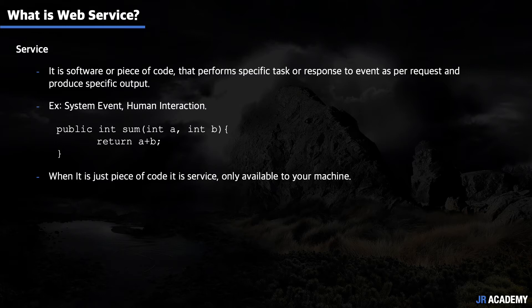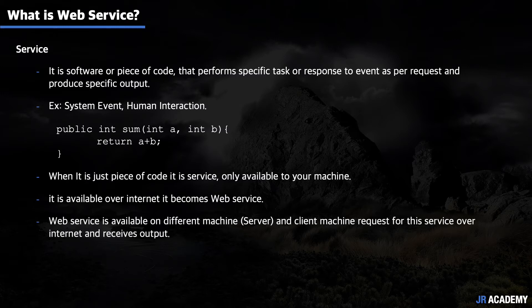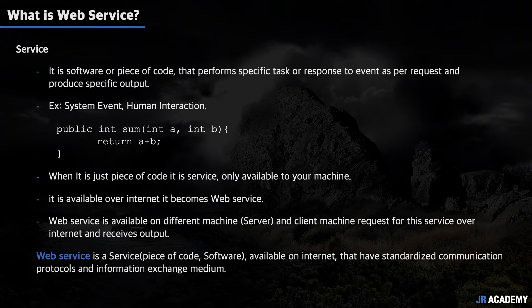When it is just a piece of code, it is a service and only available to your machine. But when it is available over the internet, it becomes a web service. Basically, a web service is available on a different machine — we call it a server — and a client machine requests this service over the internet and receives the output. By definition, a web service is a service or piece of code or software which is available on the internet and has standardized communication protocols and an information exchange medium.